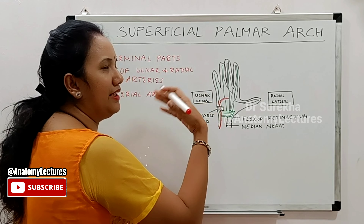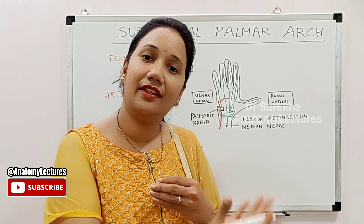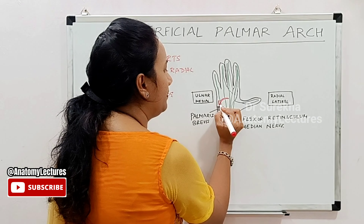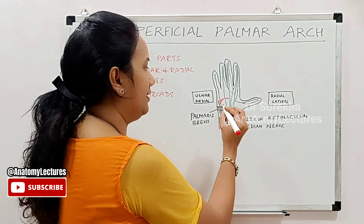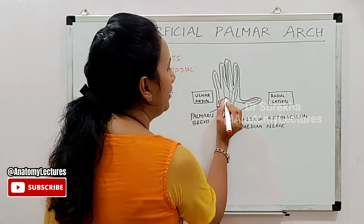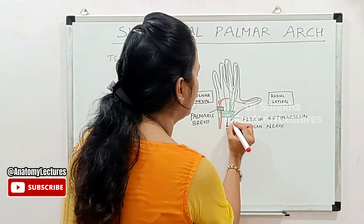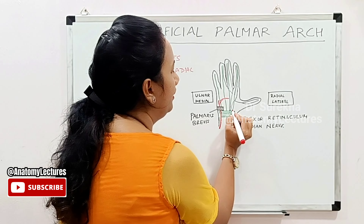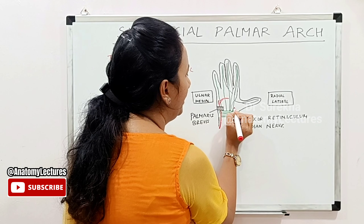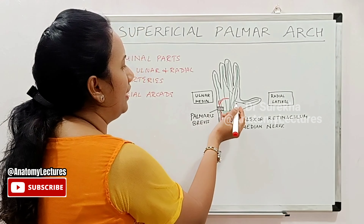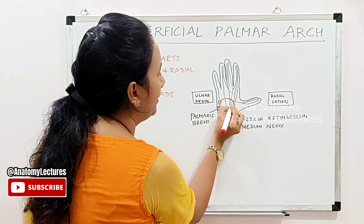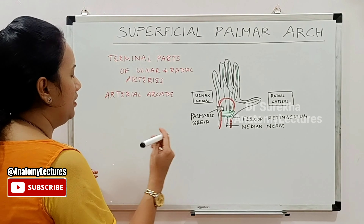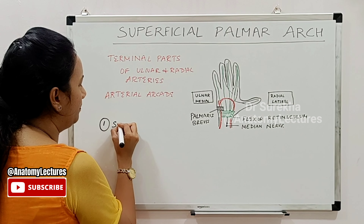The palmar aponeurosis is present here, which is another modification of the deep fascia. We have discussed that the palmar aponeurosis provides protection to the underlying structures, including these arteries. The superficial branch of the ulnar artery passes below the palmar aponeurosis and superficial to the long flexor tendons — these are the flexor tendons reaching the fingers for their insertion, with their muscles in the forearm. The lumbrical muscles take origin from these long flexor tendons.